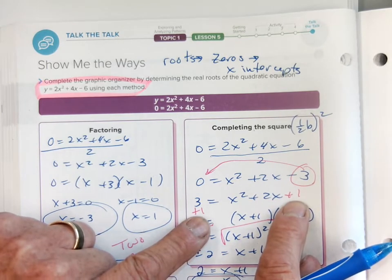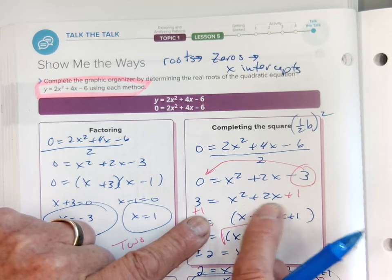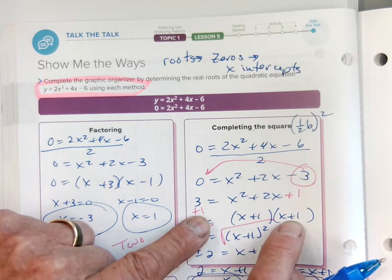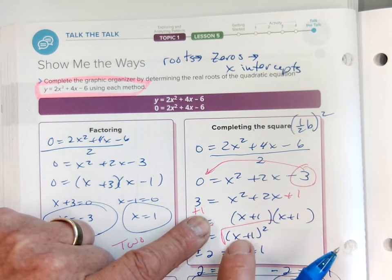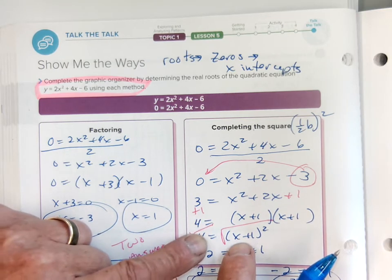The reason we do this is so it will factor. This factors into (x + 1)(x + 1), which we can rewrite as (x + 1)² = 4. That's why we complete the square.